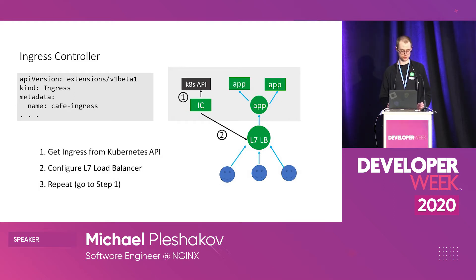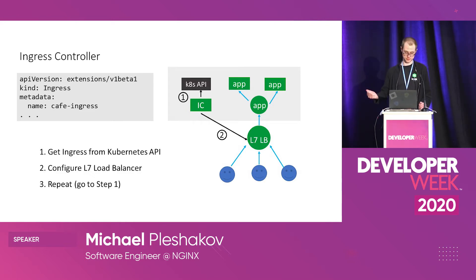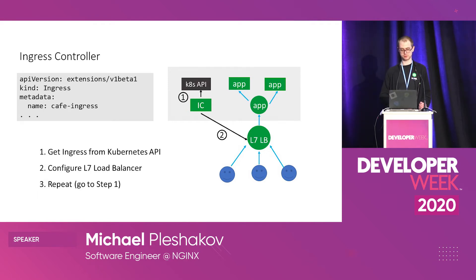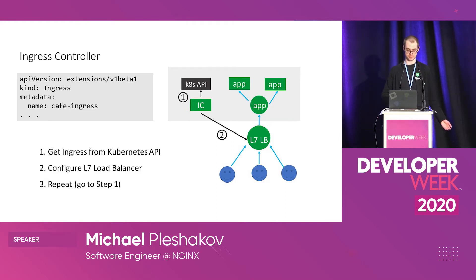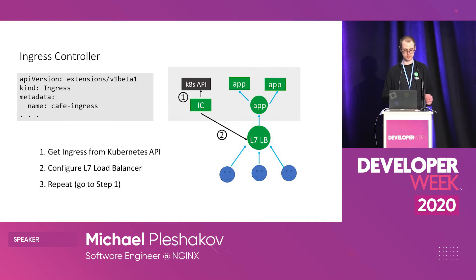There is a component called the ingress controller. The task of this component is to convert the ingress configuration into the configuration of a particular load balancer — this can be hardware, software, or a cloud load balancer. The ingress controller converts the ingress resources that Kubernetes users deploy into load balancer configuration and applies it. It does this in a loop: every time a new ingress resource is deployed or an existing one is changed, the ingress controller ensures that the load balancer stays reconfigured.